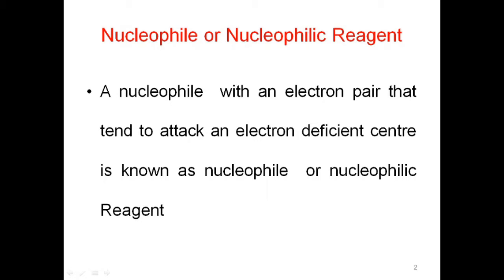Humein bahut acha pata hai ke alkyl halides mein carbon-halogen bond ek polar bond hai. Halide par partial negative charge hota hai aur carbon par partial positive charge hota hai. Isliye alkyl halide mein electron deficient center carbon hota hai.